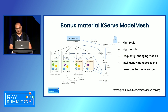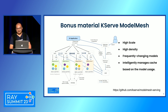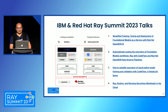KServe model mesh is another component in KServe designed for high-scale, high-density, and frequently-changing model scenarios. It has its own intelligent cache that loads and unloads models, so you could serve hundreds or thousands of models in a very small cluster. KServe model mesh is included as an open-source technology in OpenShift AI, and IBM's next-gen AI platform is built on top of OpenShift AI. There are talks tomorrow regarding OpenShift AI and related technologies.